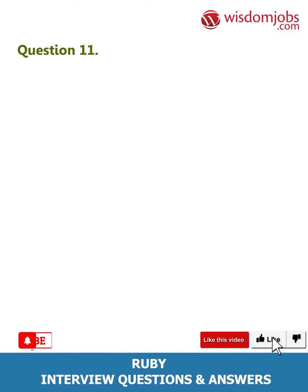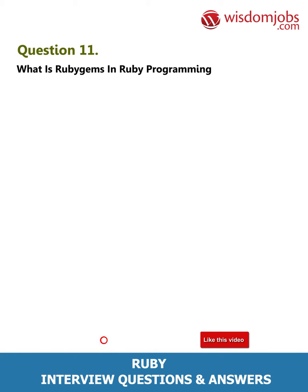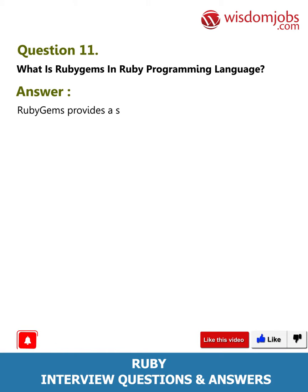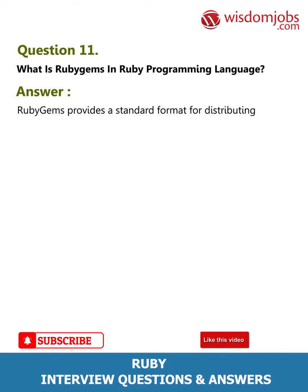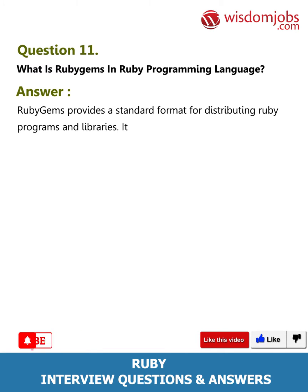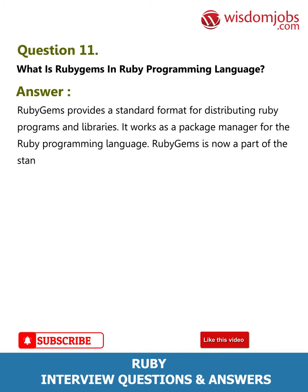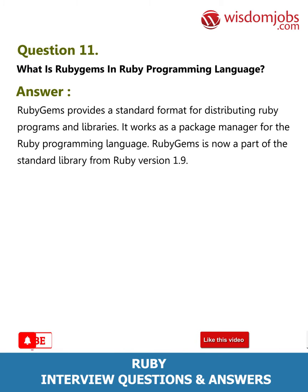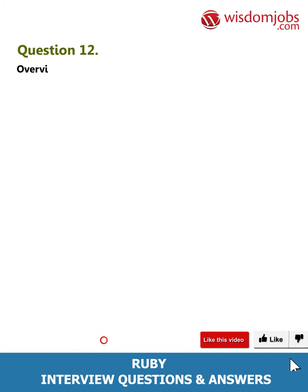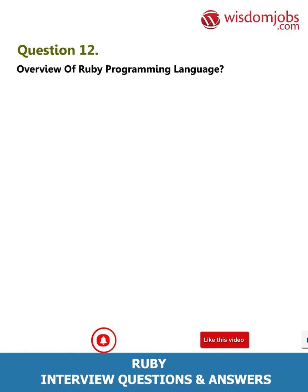Question 11: What is RubyGems in Ruby programming language? Answer: RubyGems provides a standard format for distributing Ruby programs and libraries. It works as a package manager for the Ruby programming language. RubyGems is now a part of the standard library from Ruby version 1.9.